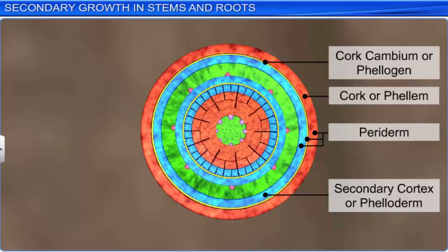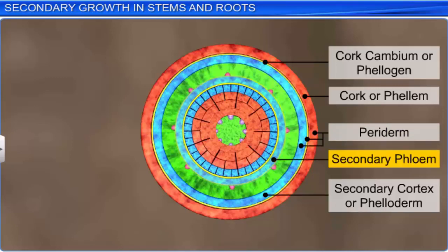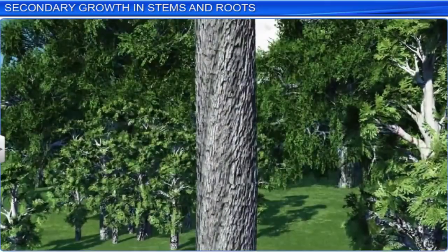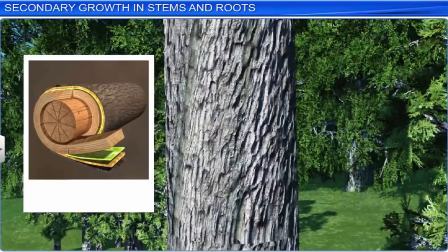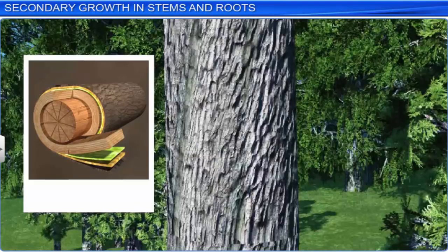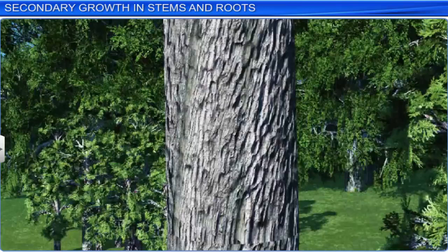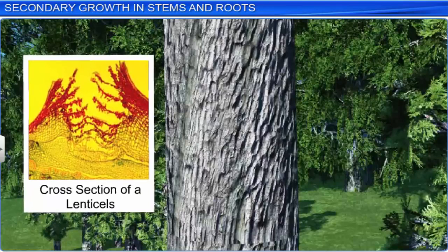Tissues outside the vascular cambium, which includes the secondary phloem and periderm, are typically known as bark. Bark forms the outermost layer of the stem and roots of woody plants. Bark formed in the early season is called early or soft bark, while bark formed at the end of the season is called late or hard bark. Due to the formation of bark, gaseous exchange between the internal living cells and the outer atmosphere is cut off. To facilitate gaseous exchange, phelogen cuts off parenchymatous cells that break the epidermis and form lens-shaped openings on the stem called lenticels.